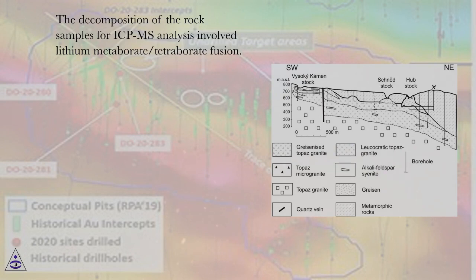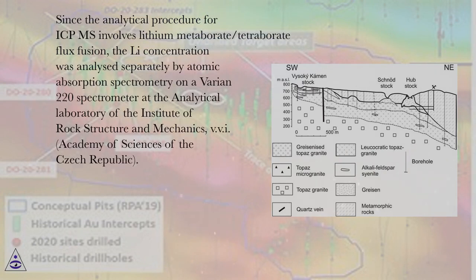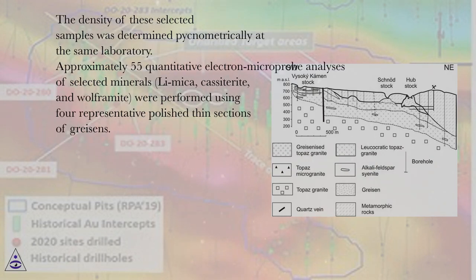The decomposition of the rock samples for ICP-MS analysis involved lithium metaborate/tetraborate fusion. Since the analytical procedure for ICP-MS involves lithium metaborate/tetraborate flux fusion, the Li concentration was analyzed separately by atomic absorption spectrometry on a Varian 220 spectrometer at the Analytical Laboratory of the Institute of Rock Structure and Mechanics, v.v.i., Academy of Sciences of the Czech Republic. The density of these selected samples was determined pycnometrically at the same laboratory.